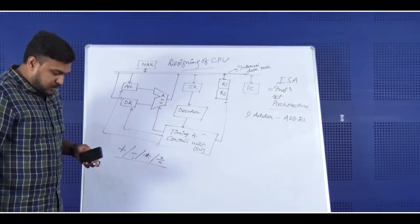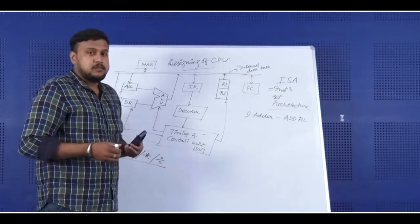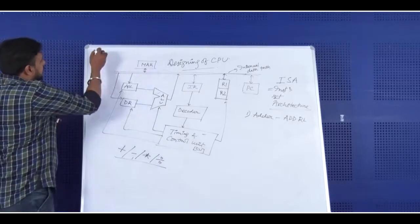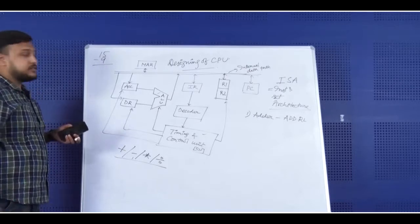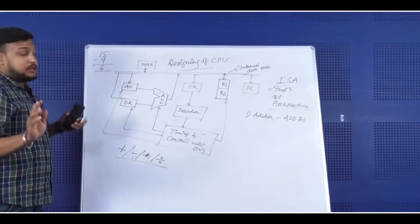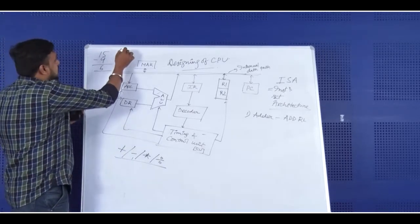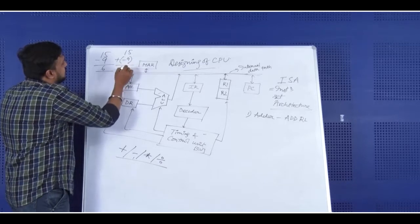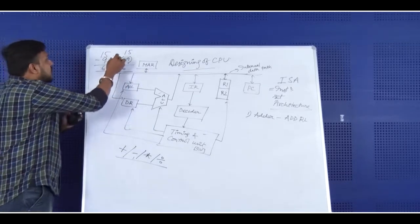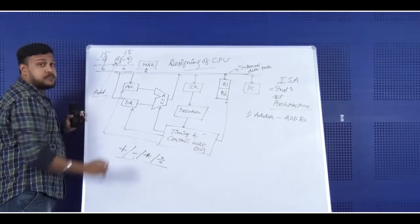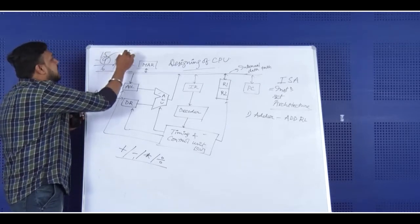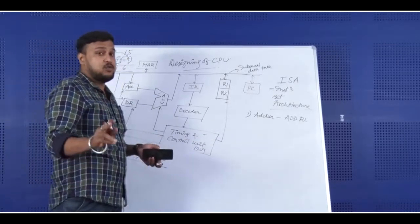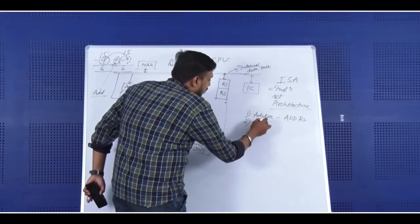For subtraction, do we need a subtractor, or can we do it without one? If I write 15 minus 9, the answer is 6 — here we use a subtractor. But if I write 15 plus minus 9, the result is again 6 — here we do not need a subtractor, rather we need an adder. The trick is simple: we just convert 9 to minus 9, for which a NOT gate is good enough. So we do not need a subtractor. We can do subtraction by using addition and one complement operation.